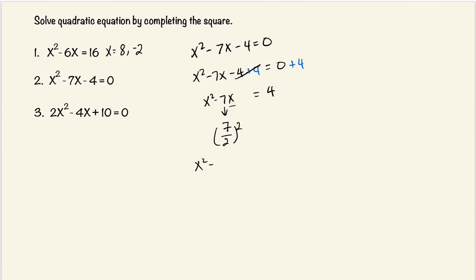And now we want to add this term to both sides. This makes the left side a perfect square, and we can rewrite that.